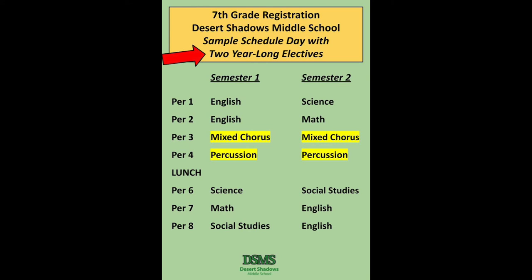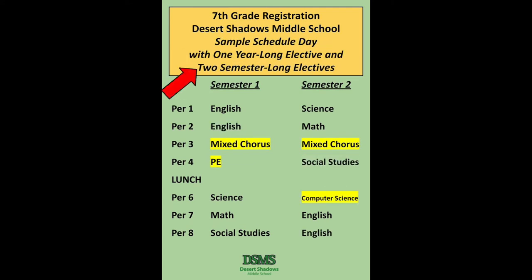This particular schedule shows four academic classes, lunch, and two year-long electives — one year of mixed choir and one year of percussion. On this next slide, you can see another variation of a typical 7th grade schedule. This student has four core academic classes, lunch, one year-long elective, and two semester-long electives — one year of mixed choir, one semester of PE, and one semester of computer science.